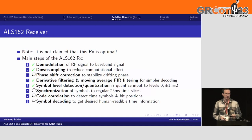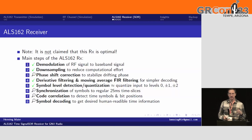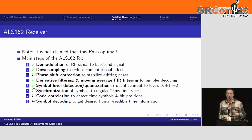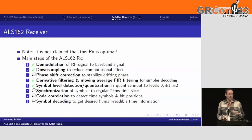Now the interesting part — the receiver. There are several steps to be done and I think most of you have seen such steps already, so I won't go into detail for each of those. There is the demodulation step — that's pretty straightforward. And we have time downsampling. I'll just use the downsampling module of the radio — that's also pretty straightforward, just to reduce the complexity of the signal.